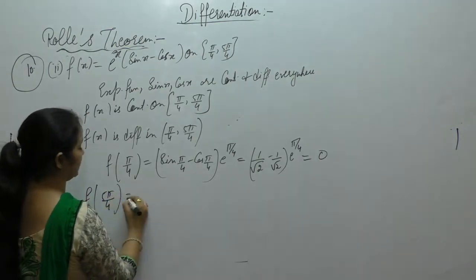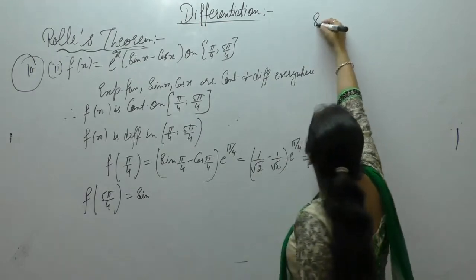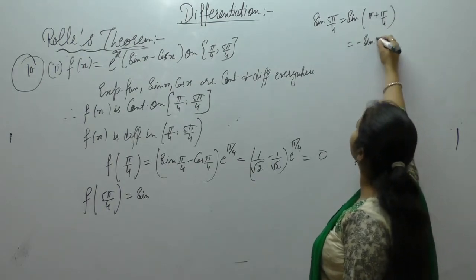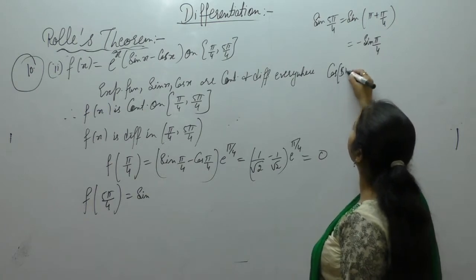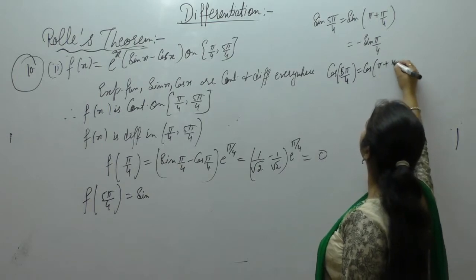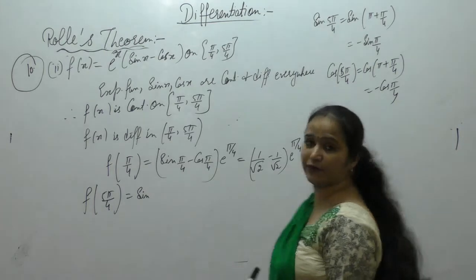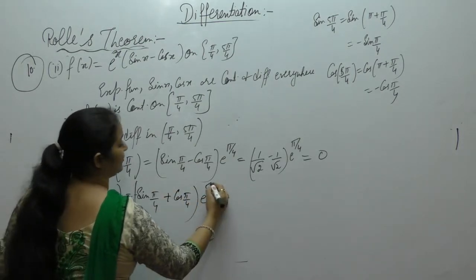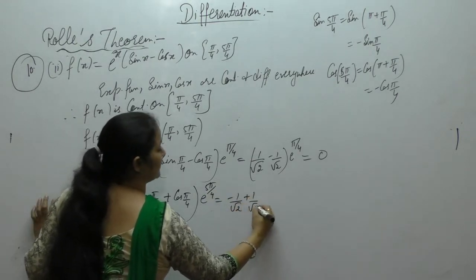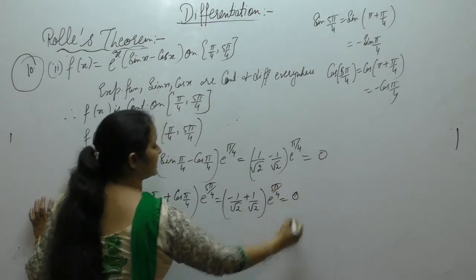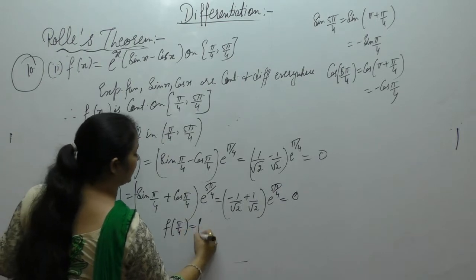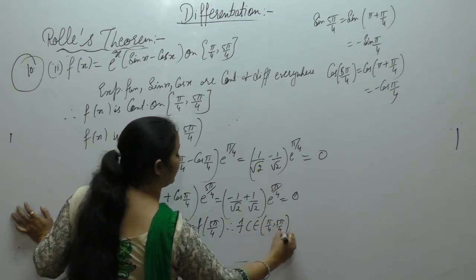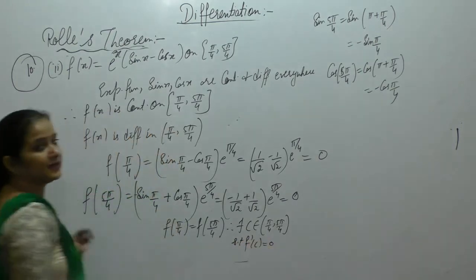Now f(5π/4): sin(5π/4) = sin(π + π/4) = -sin(π/4). Similarly cos(5π/4) = cos(π + π/4) = -cos(π/4). So f(5π/4) = e^(5π/4)(-sin(π/4) - (-cos(π/4))) = e^(5π/4)(-1/√2 + 1/√2) = 0. So f(π/4) = f(5π/4) = 0. Therefore there exists c in (π/4, 5π/4) such that f'(c) = 0.